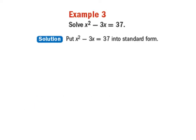So, what we have to do first is put x squared minus 3x equals 37 into standard form. Because if we notice, this equation does not look like the previous equations we have solved. In the previous equations, we had a whole bunch of stuff on one side of the equation, and it was equal to 0. And in this case, it is not equal to 0, it's equal to 37.